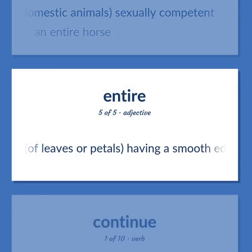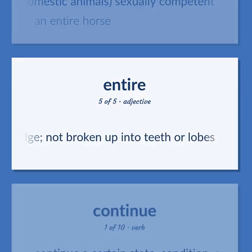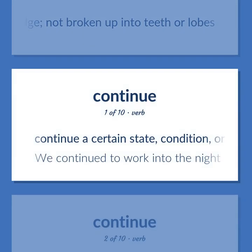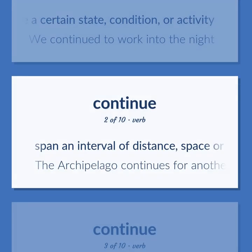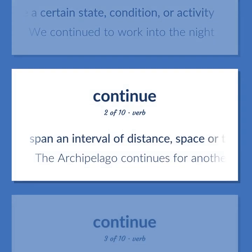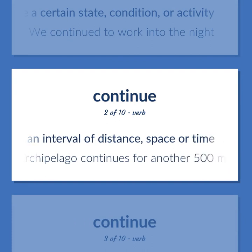Of leaves or petals, having a smooth edge, not broken up into teeth or lobes. Continue a certain state, condition, or activity. We continued to work into the night. Span an interval of distance, space, or time — the archipelago continues for another 500 miles.